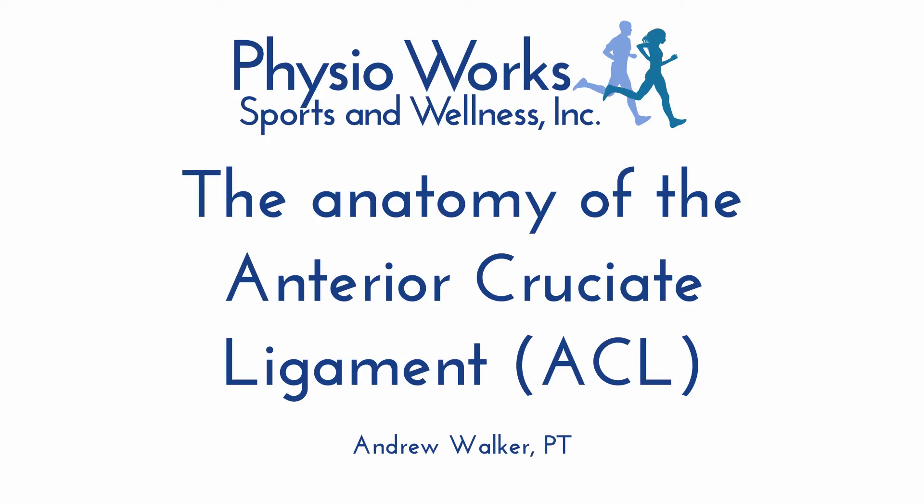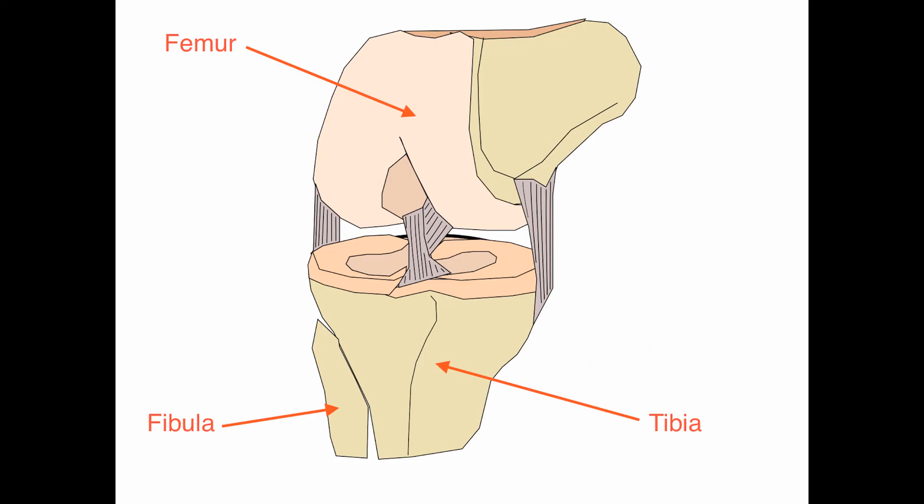This image shows the three main bones of the knee. We have the tibia and the fibula, which are two of the bones in the shin, the tibia being the larger of the two, which the ACL runs from. The femur is the bone in the thigh, and this is where the ACL runs to.